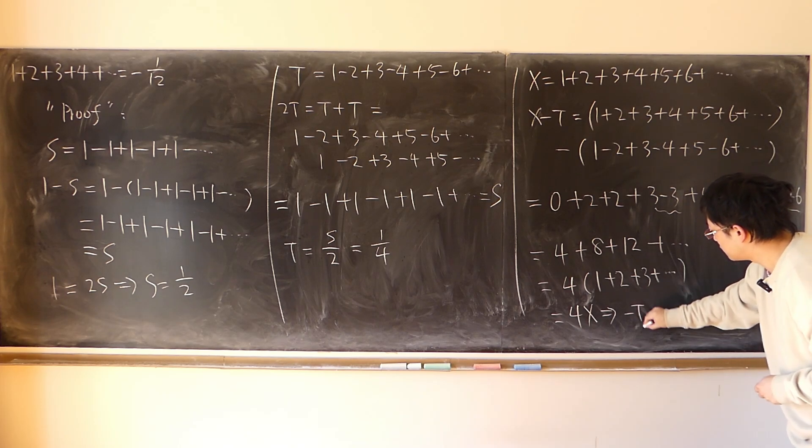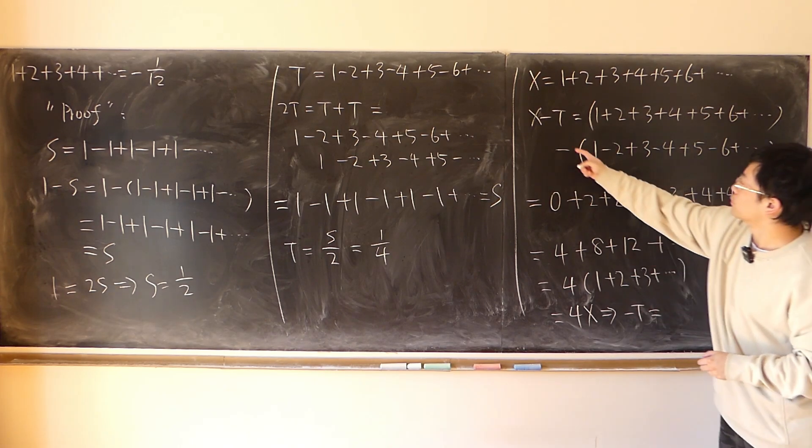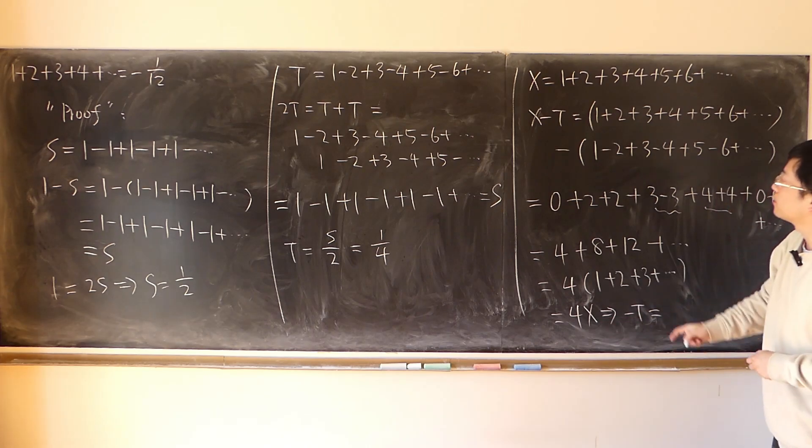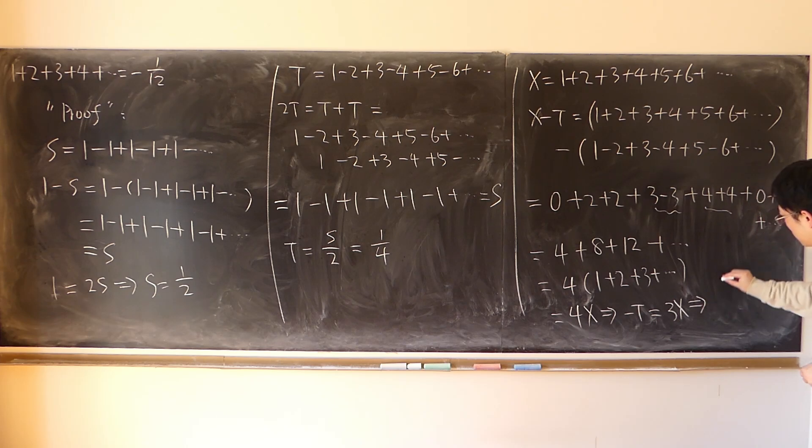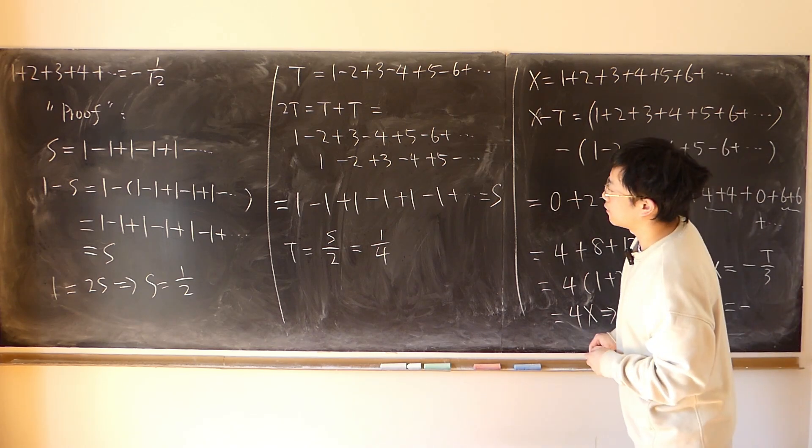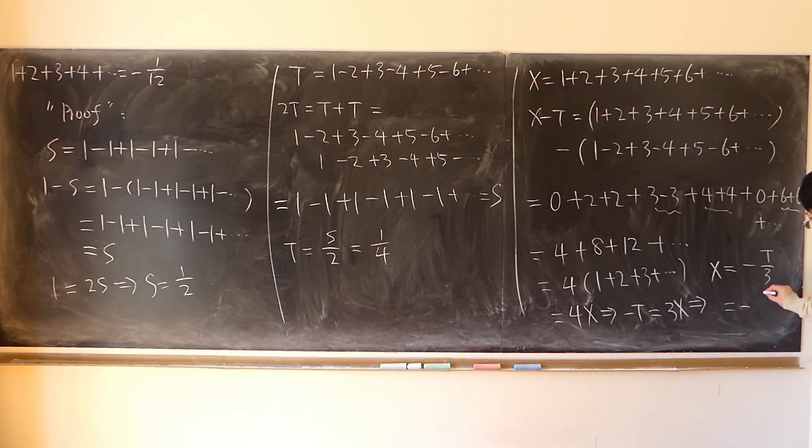So this time x minus t is equal to 4x. So minus t is equal to, move this x to this side, so 4x minus x, 3x. So x is equal to negative t over 3. That is negative t is 1 over 4. Negative 1 over 12.